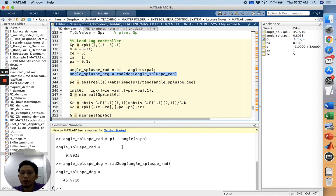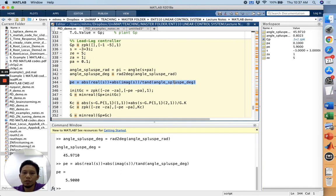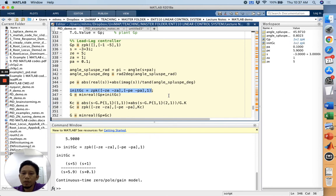We find the angle in degrees is 45.97, as we have done in the lecture notes. Then we can find the value of PE, which is 5.9. We can put it into the initial value for our GC without including KC yet, so we have (s+5)(s+1) over (s+5.9)(s+0.1).